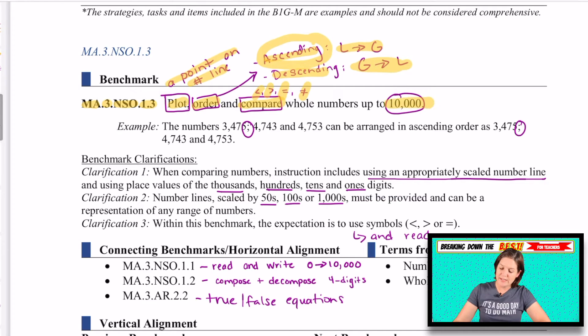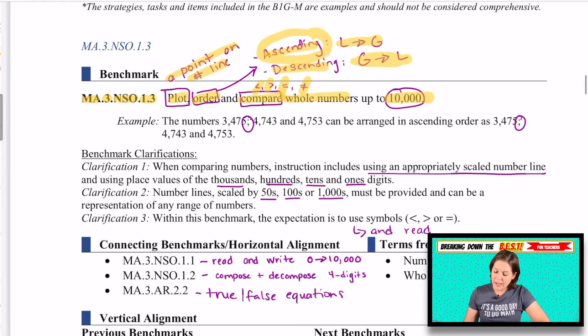We're doing this up to 10,000. Whole numbers, by the way. No decimals, no fractions here. Just whole numbers. Something that I noticed in the example, as you can see, these numbers, like 3,475, because we have a four-digit number, because we have a comma, a nice way to separate and be able to see is using a semicolon to separate.